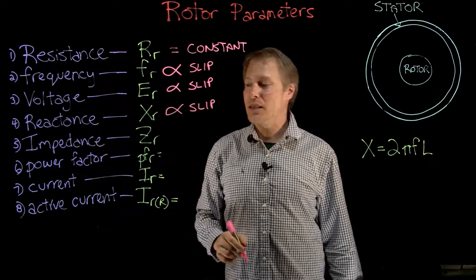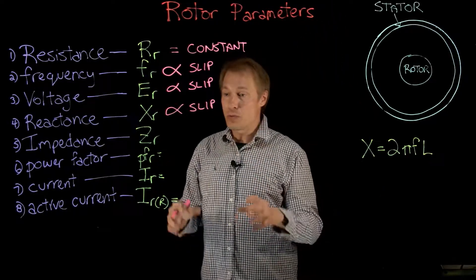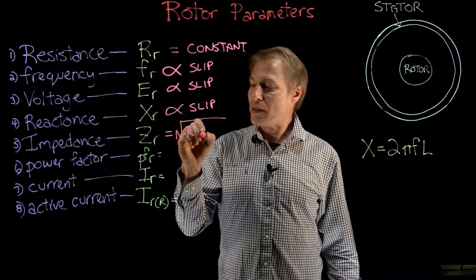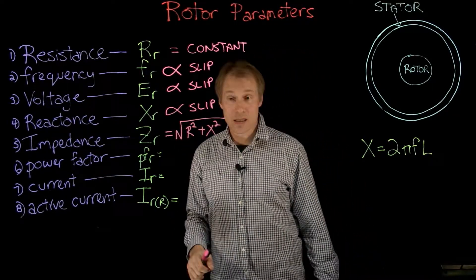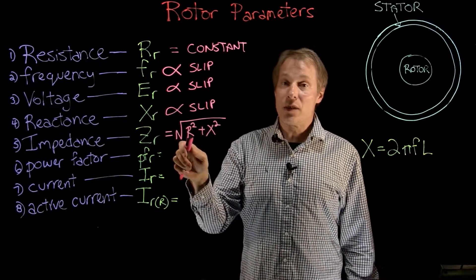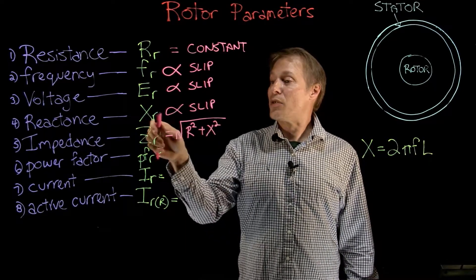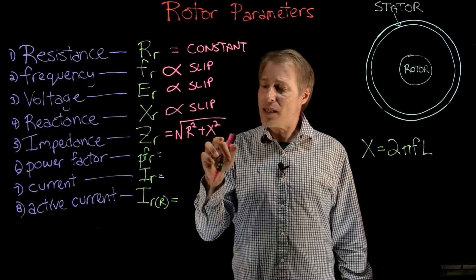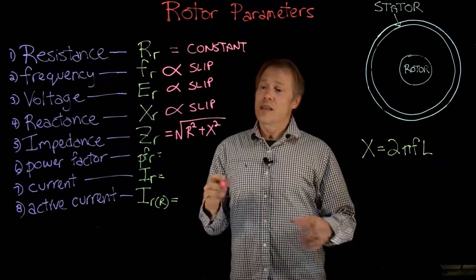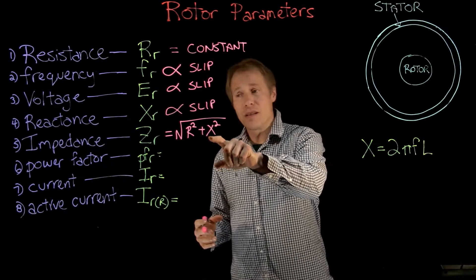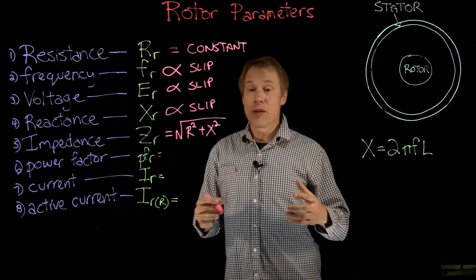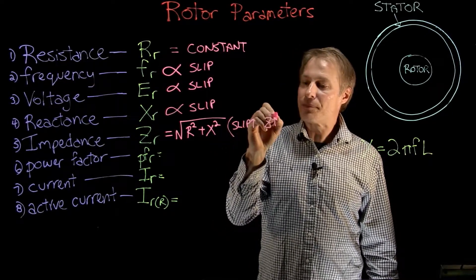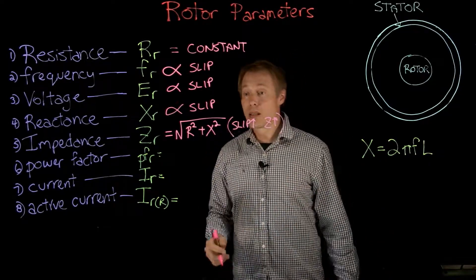Impedance — the symbol is Z, with the 'r' subscript standing for rotor. The formula for impedance is the square root of resistance squared plus reactance squared. We established that resistance stays constant, and reactance goes up with slip. So as slip increases, resistance stays the same and reactance goes up, which makes impedance go up. The difference is it won't be directly proportional — if reactance doubles, impedance won't double; it will still go up, but not in direct proportion. So: as slip goes up, impedance goes up, but not directly proportionally.